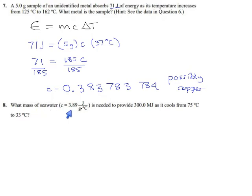What's going on with this one? What mass of seawater is needed to provide 300 megajoules as it cools from 75 to 33? Pretty much as soon as you see anything about temperature change, you can haul out this formula. It's the only one we have that does temperature changes, so start with it anyway and see if you can make it work.